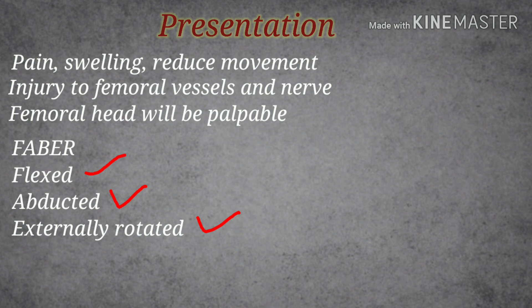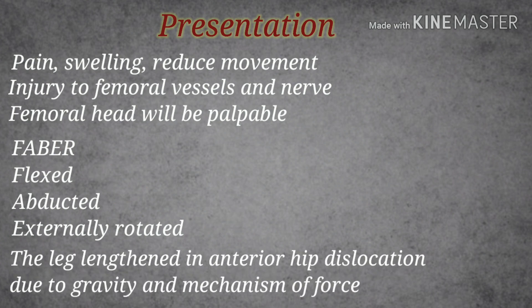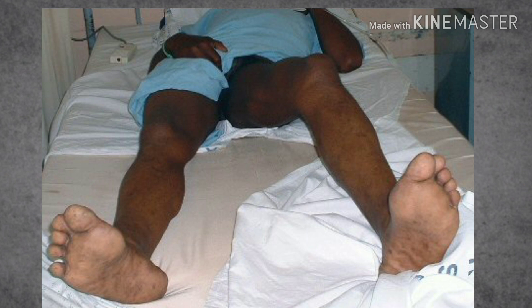It is very important to remember the typical signs of anterior hip dislocation: the leg is flexed, abducted, and externally rotated. Since the most common subtype is the anterior inferior (obturator type), the leg will also appear lengthened. In this particular patient image, we can see the leg is in a flexed, abducted, and externally rotated position.